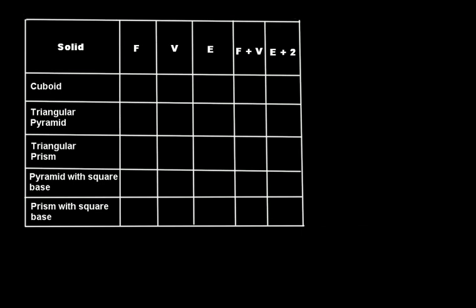Let's learn what Euler's formula is. We have some polyhedrons here: a cuboid, triangular pyramid, triangular prism, pyramid with square base, and prism with square base. F represents faces, V for vertices, E for edges, and then we have to fill in the data for F plus V and E plus 2.